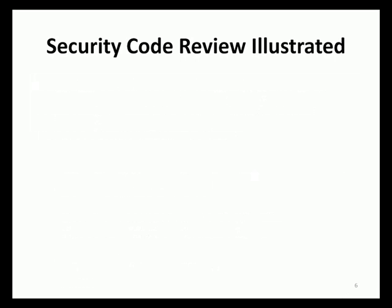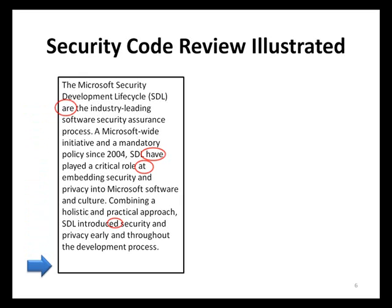If you are new to the concept of security code review, the easiest way to conceptualize this security assessment process is to imagine the role of a publication editor. When an author submits written text such as a book, news article, or white paper for publication, an editor will review that text prior to release to ensure that the final publication is of the highest possible quality. As part of the editorial process, each line of the text is reviewed for errors such as grammatical errors, inappropriate language usage, and other aspects that might affect the overall quality of the text.